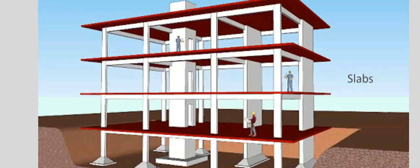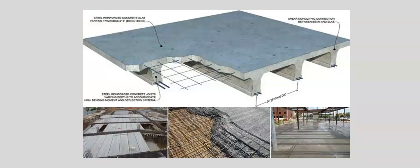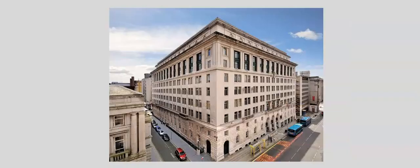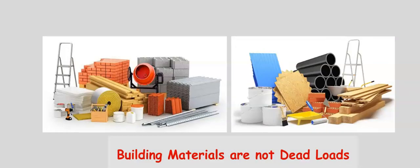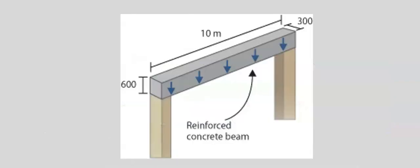Slabs are used to separate floors of tall structures. The slab remains relatively permanent over time and constitutes dead load. All the immovable features and members of a structural building are known as dead loads. However, building materials before construction are not dead loads — the structural elements formed from the materials are dead loads.